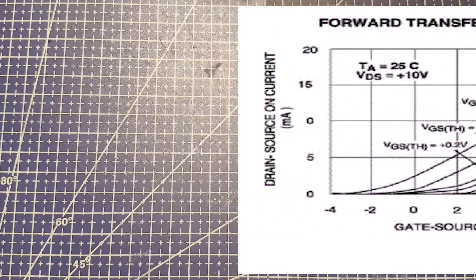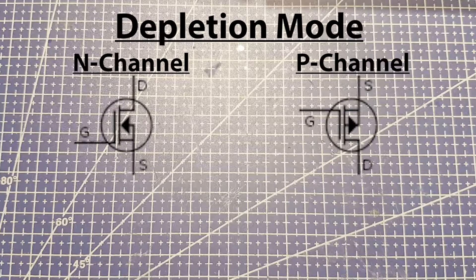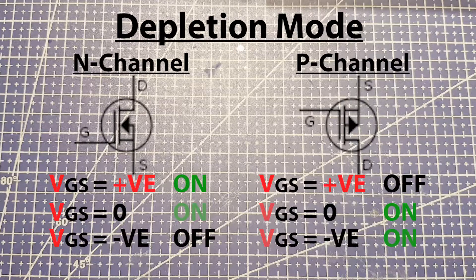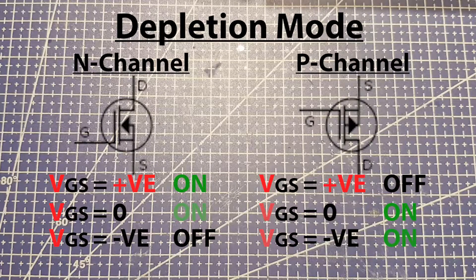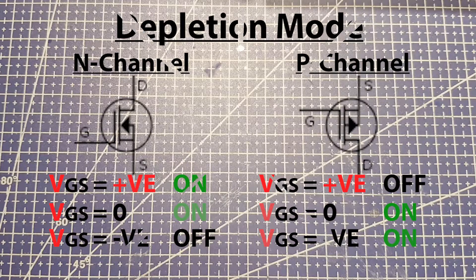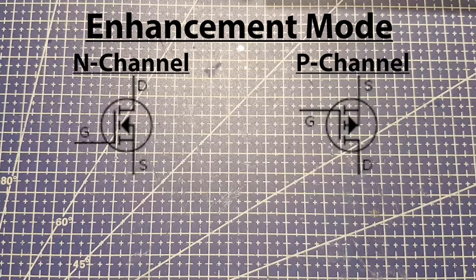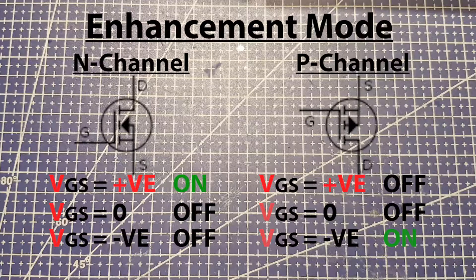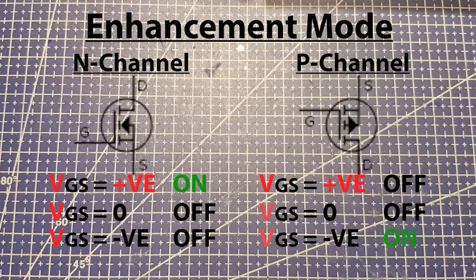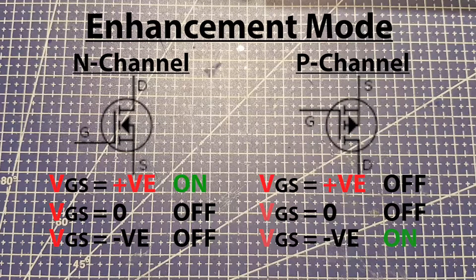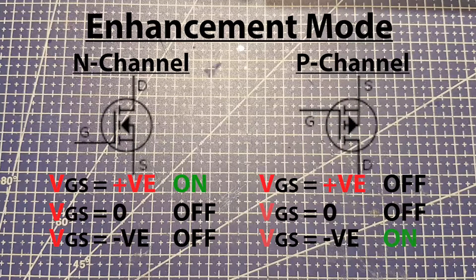Most JFETs are depletion mode. So at zero volts from gate to source, the channel is on. So gate potential depletes the drain to source current. Now the metal oxide semiconductor field effect transistors, the MOSFETs, are mostly enhancement mode. So at zero volts gate to source, the source to drain channel is off. So as the potential increases, the current increases.